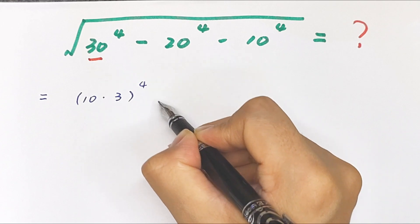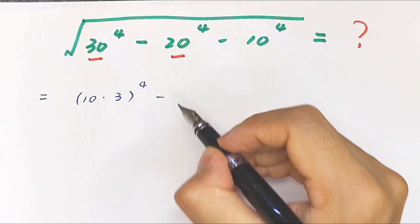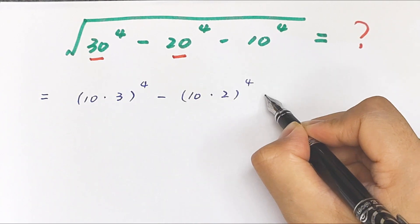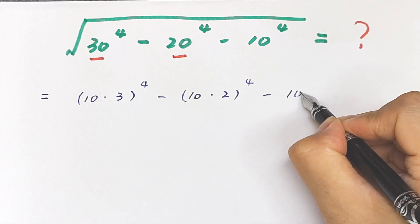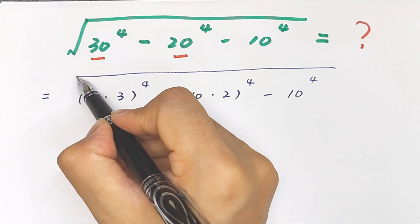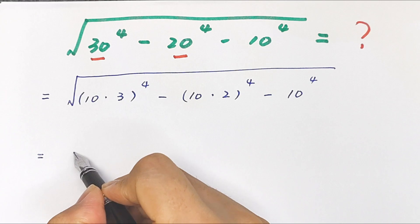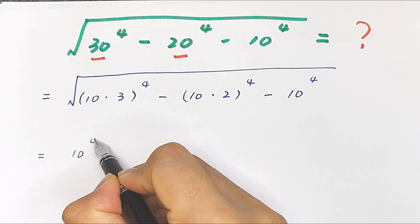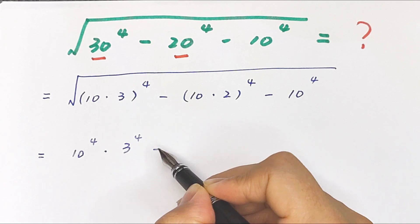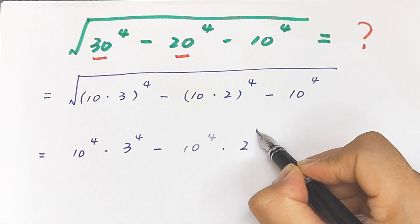30 is the same as 10 times 3, bracket to the power of 4, minus 20 is the same as 10 times 2, bracket to the power of 4, minus 10 to the power of 4. We open the brackets: 10 to the power of 4 times 3 to the power of 4, minus 10 to the power of 4 times 2 to the power of 4.